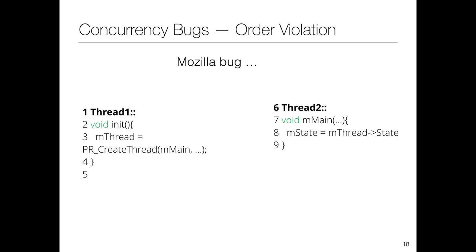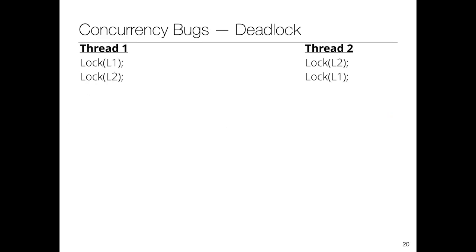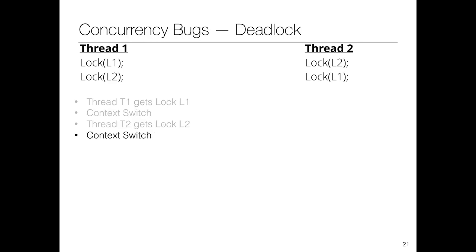An order violation example: you can't access a value before it's defined, so thread T1 must run before T2. You can enforce this ordering using semaphores or condition variables with a mutex. For deadlock: if T1 acquires L1 then tries to acquire L2, while T2 acquires L2 then tries to acquire L1, you get a classic deadlock—each thread is holding one lock and waiting for the other.